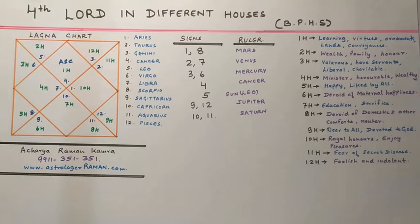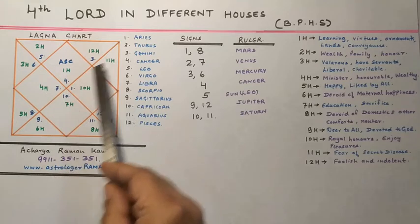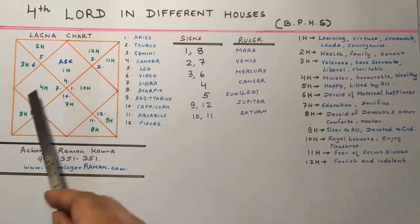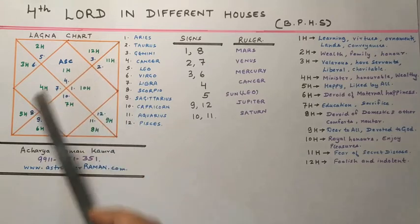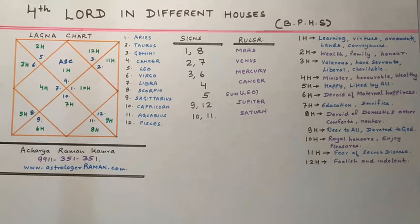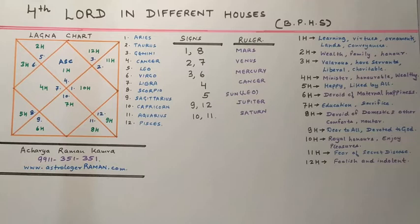If the 4th lord be placed in the 11th house, the native will have fear of secret diseases, but he will be liberal, virtuous, charitable, and helpful to others.